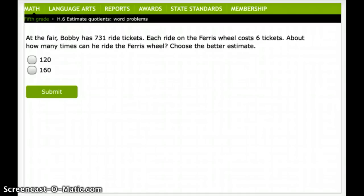So here's a word problem let's look at. At the fair, Bobby has 731 ride tickets. Each ride on the Ferris wheel costs 6 tickets. About how many times can he ride the Ferris wheel? Through my marked important information. So it's 731 ride tickets. Each ride costs 6 tickets. About times on the Ferris wheel. Okay? So you want to take that. So I'm going to do 731 divided by 6.